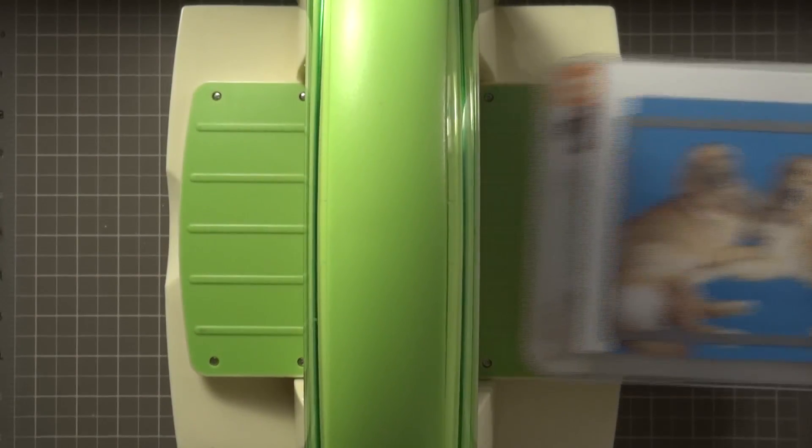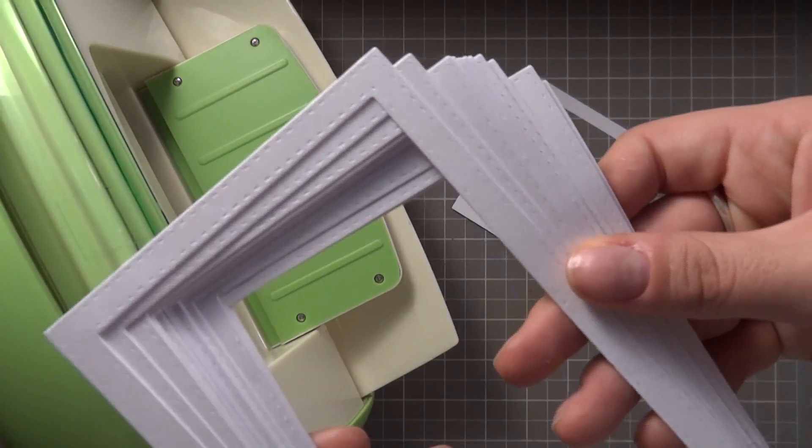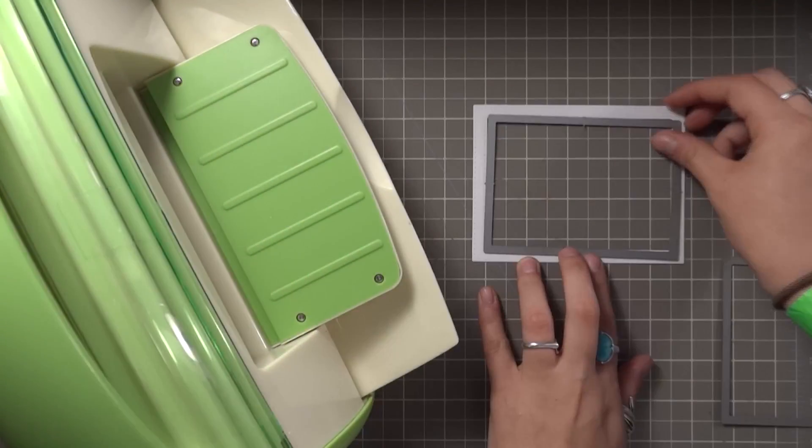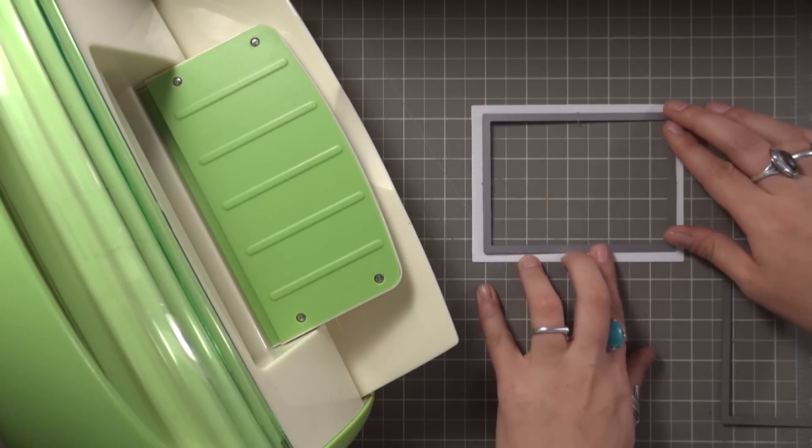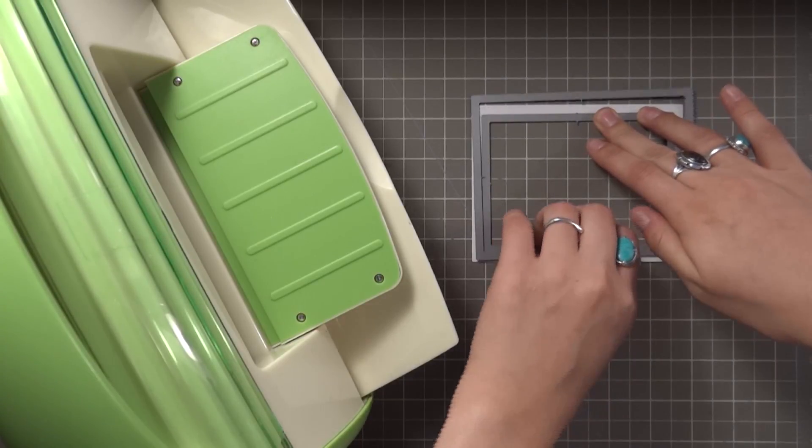I'm starting off by running my puppy picture through my Cuddle Bug using the largest rectangular die. Similar to my shaker card, I've previously cut multiple borders using my stitched rectangle dies. However, since I've detached the two dies I used to create the borders, I need to line them back up again to ensure that they are the exact same distance.